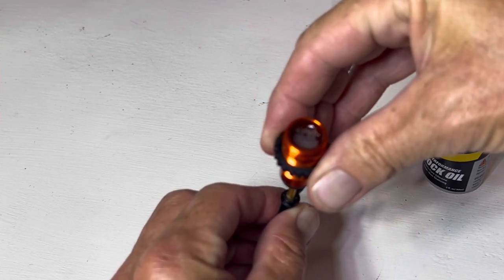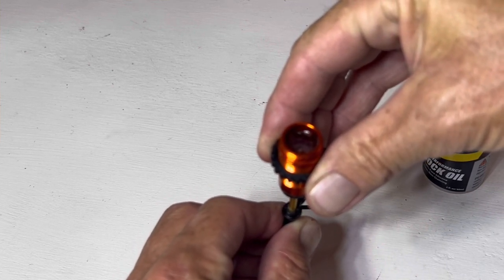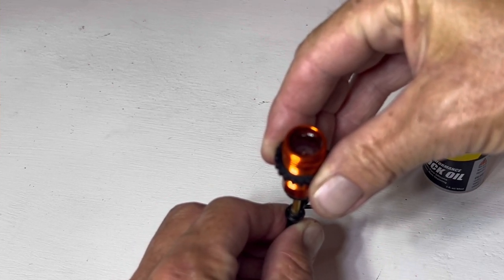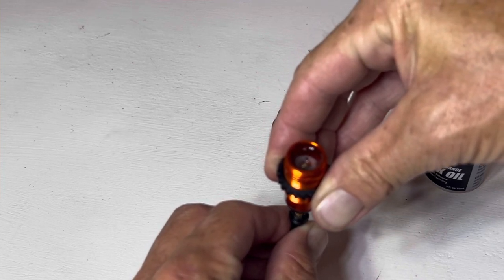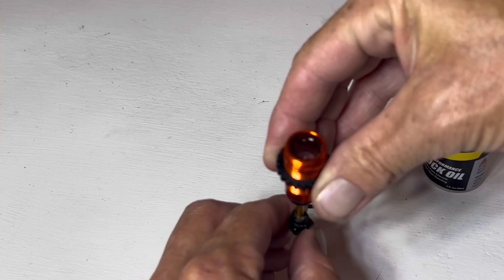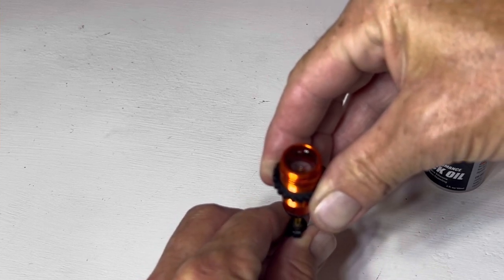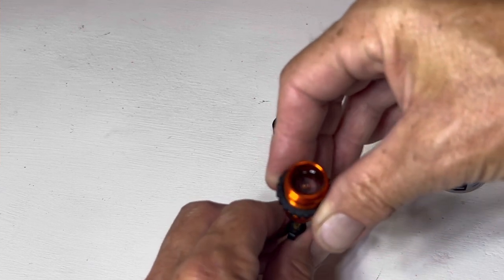Hopefully you can see those bubbles appearing. The lighter the oil, the faster the bubbles come to the top. The heavier the oil, the slower they come to the top. So just remember that. You're going to do this a few times, cycle it through, get all those bubbles out because any bubbles means resistance.